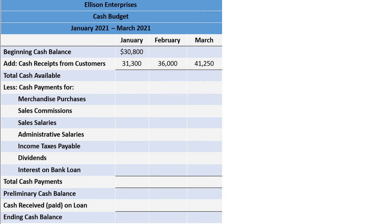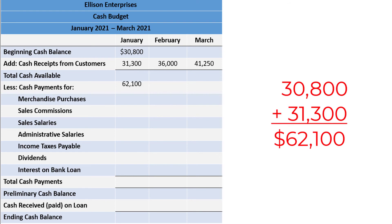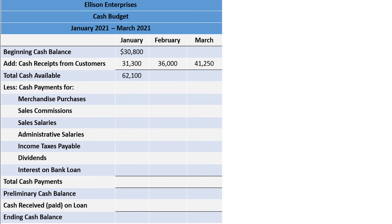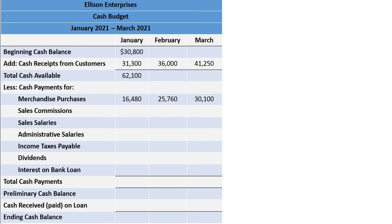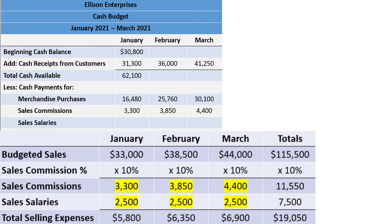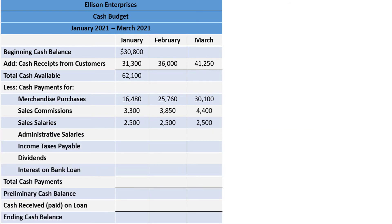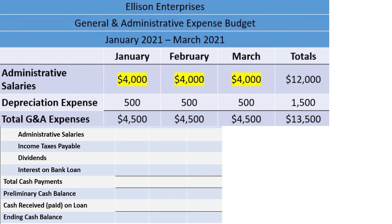Adding the beginning cash to the cash receipts from customers gives us the total cash available of $62,100 for January. We can't complete the February or March values until we know the beginning cash balance, so we will leave them blank for now. Next we have the cash payments, first for merchandise purchases, which come from the schedule of cash payments for merchandise: $16,480, $25,760, and $30,100 for the first three months of 2021. The sales commissions and sales salaries come from the selling expense budget. The commissions are $3,300, $3,850, and $4,400 for January, February, and March. The sales salaries are a flat $2,500 per month. The administrative salaries come from the general and administrative expense budget and are a flat $4,000 per month.